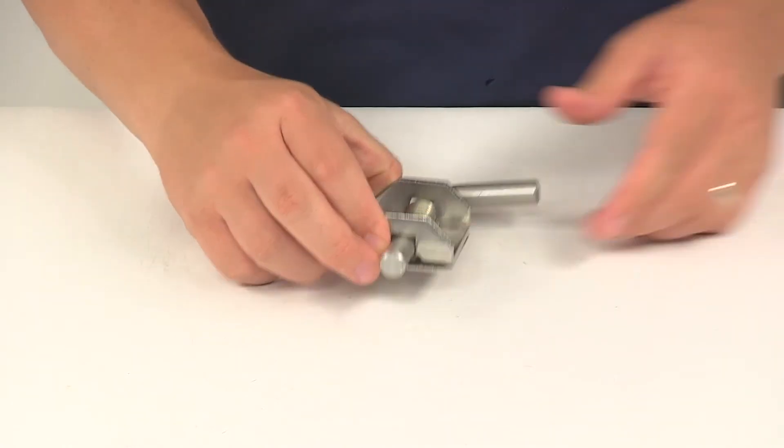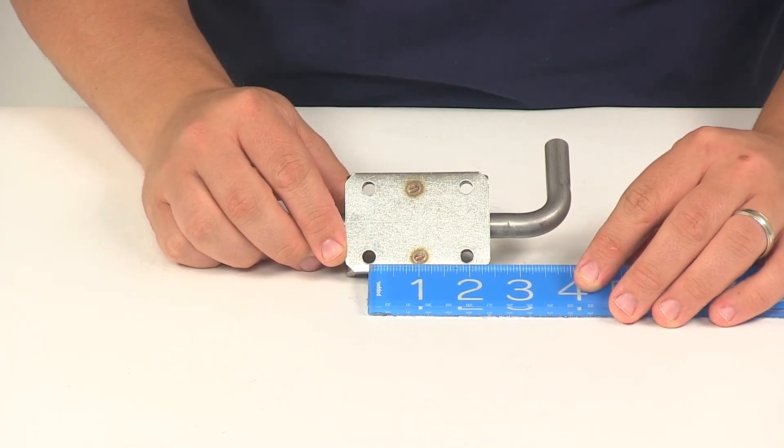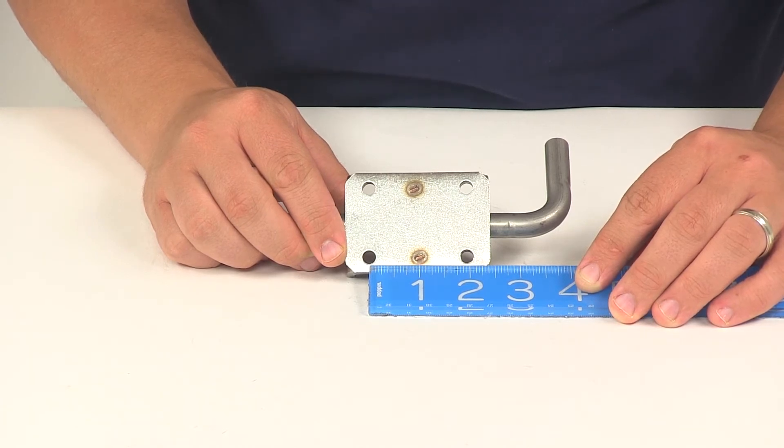When it comes to the mount hole pattern, if we take a measurement center on center, the distance between our mount holes going this direction, we're looking at a measurement of one and fifteen sixteenths of an inch.